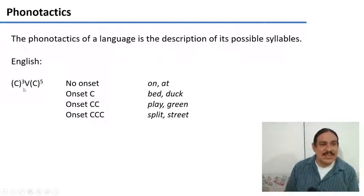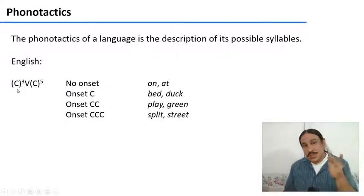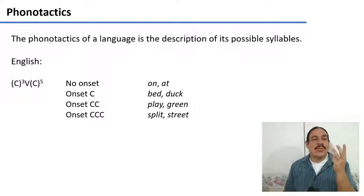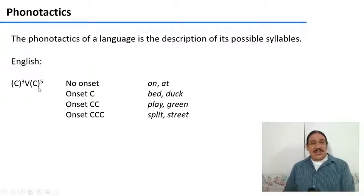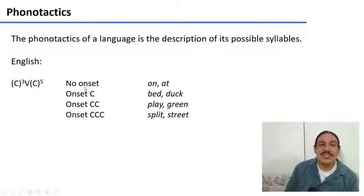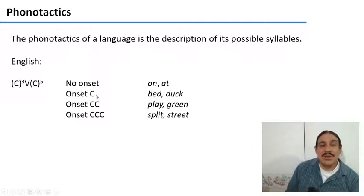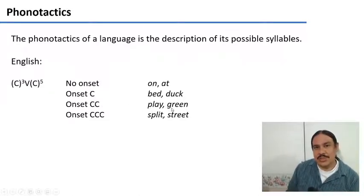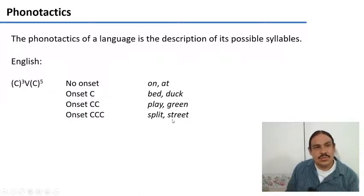Optionally, a syllable can have one sound in its onset, two sounds in its onset, or three consonants in its onset. Onsets are optional, so you can have English syllables with no onsets, such as 'on' or 'at.' You can have syllables with one onset consonant, like 'bed' and 'duck,' with two onset consonants, like 'play' and 'green,' or even three onset consonants, like 'split' and 'street.'